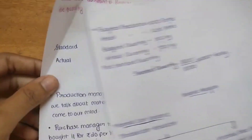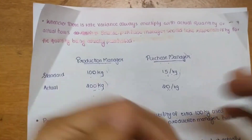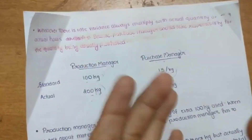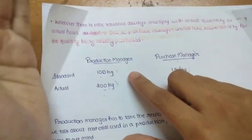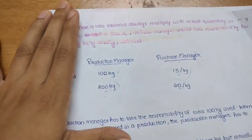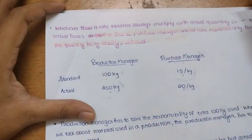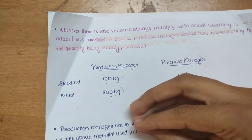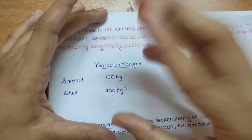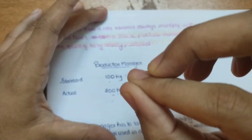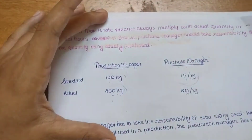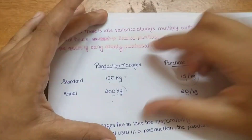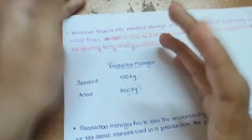Let's start with the material cost variance. We are going to talk about the roles of the production manager and purchase manager. The production manager will estimate production — we will use the production chain to manage production and raw materials, and estimate accordingly.